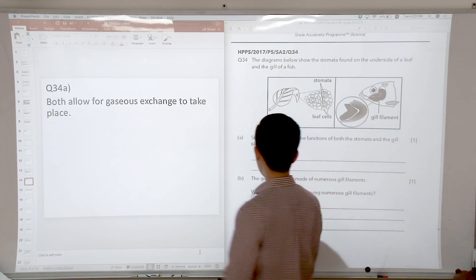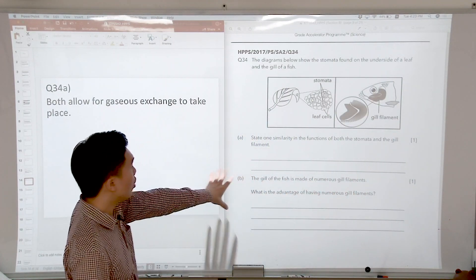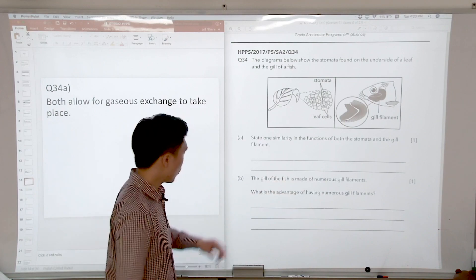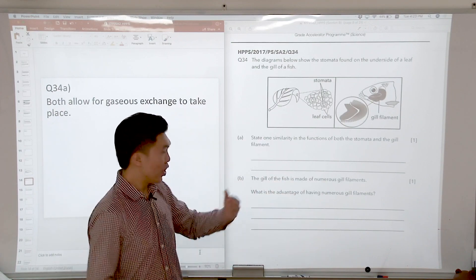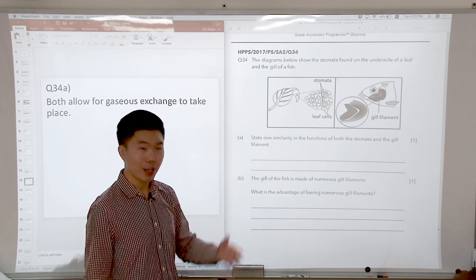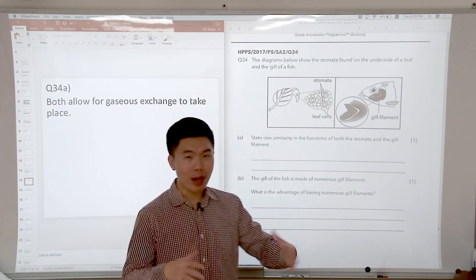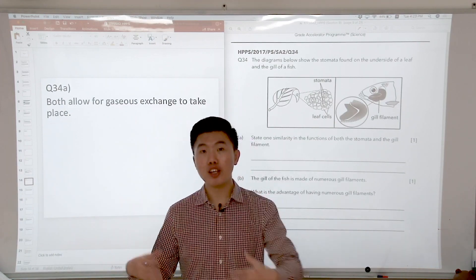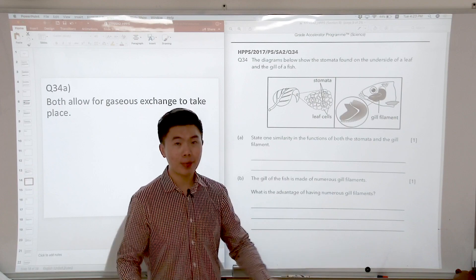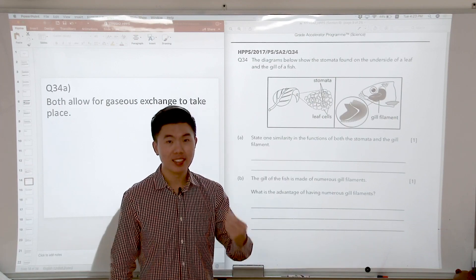How about part B? The gill of the fish is made up of numerous gill filaments. What is the advantage of having numerous gill filaments? I also mentioned this. Having numerous gill filaments is like having numerous air sacs. The key thing is about exposed surface area.